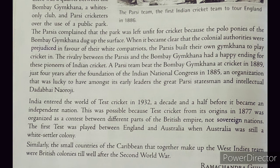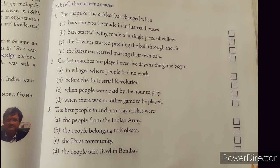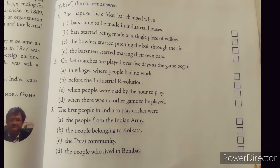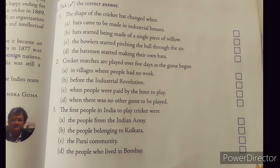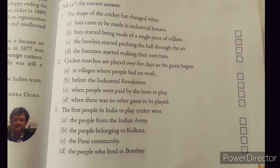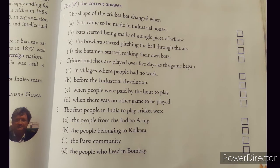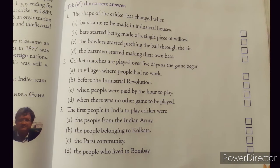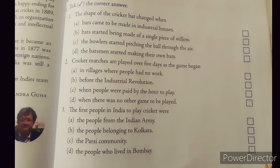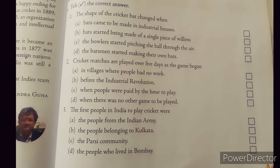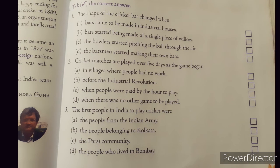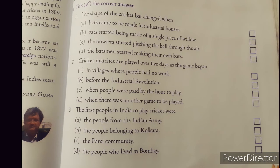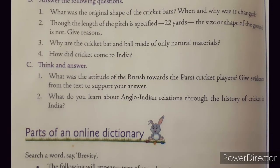Now let us look at the question answers for this chapter. There are three MCQs. First: the shape of the cricket bat changed because the bowler started pitching the ball through the air. Second: cricket matches are played over five days because the game began before the industrial revolution. Third: the first people in India to play cricket were the Parsi community.